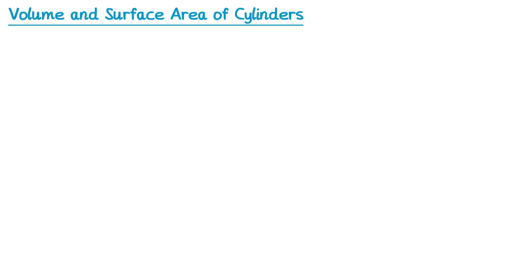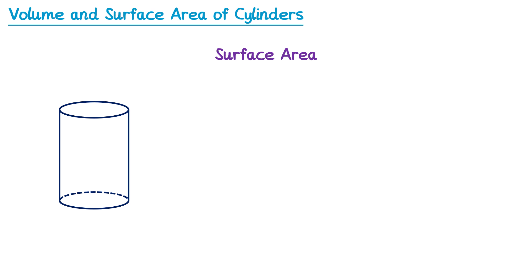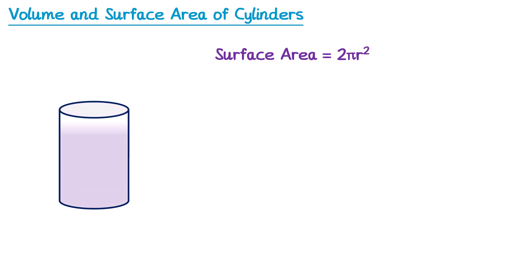Now let's take a look at how you find the surface area. If we take a cylinder, the surface area is the total area of all of its faces. We have a circular face on the top and a circular face on the bottom. The area of the top one is πr², and so is the area of the bottom one because they're the same size circle. So at the moment we have πr² plus another πr², which we could write as 2πr². That's the area of the circular faces, but there's one more face on this cylinder — the curved face that goes around it.